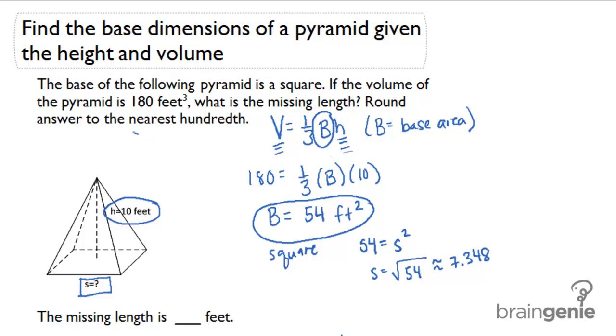The problem tells me to round to the nearest hundredth, which means that the length of my side is close to 7.35. That's where we are.